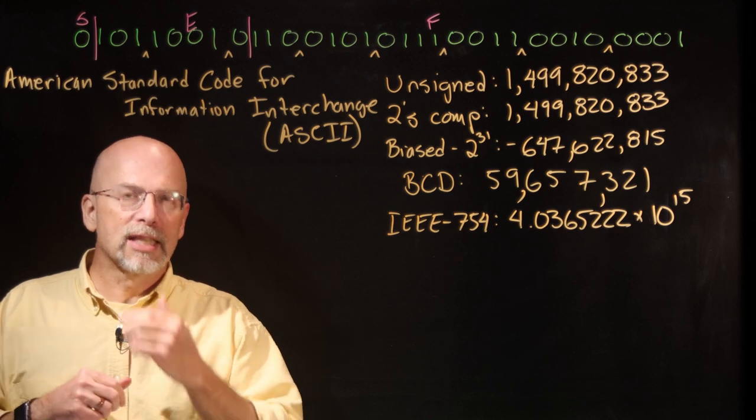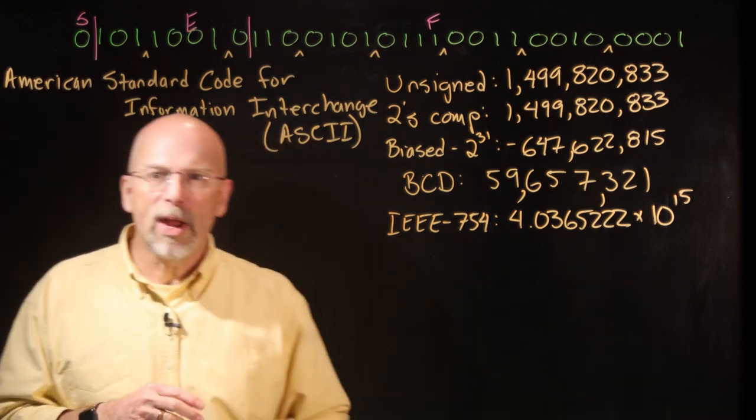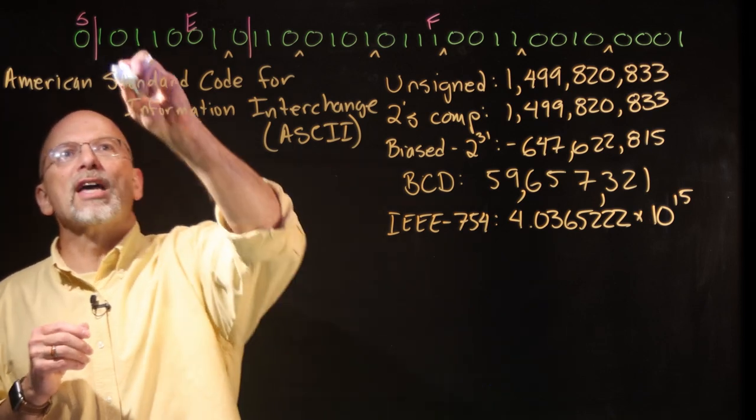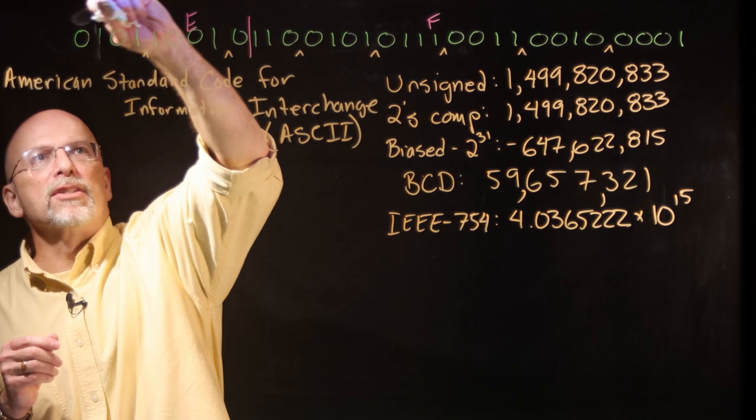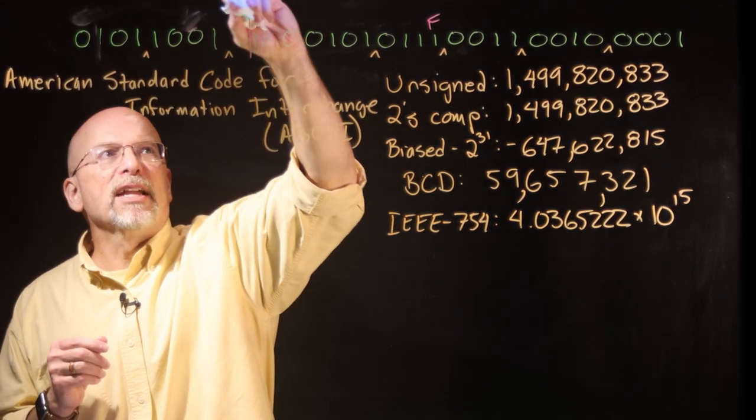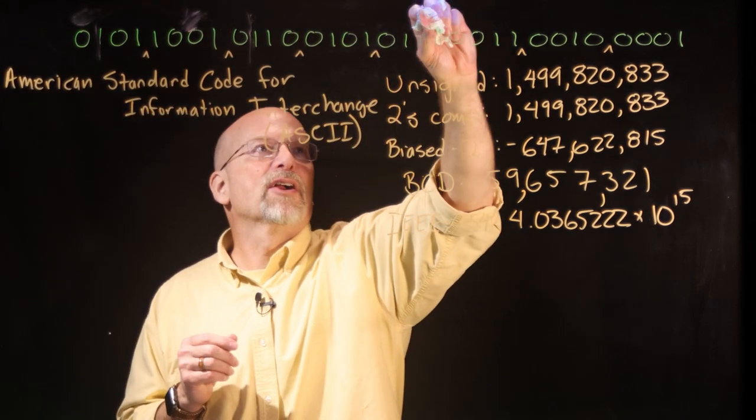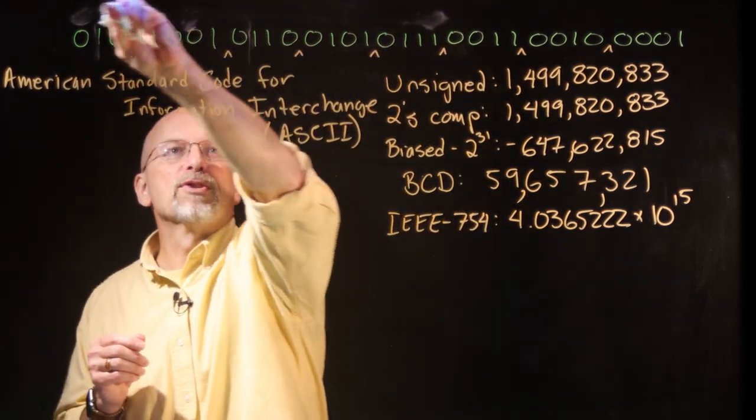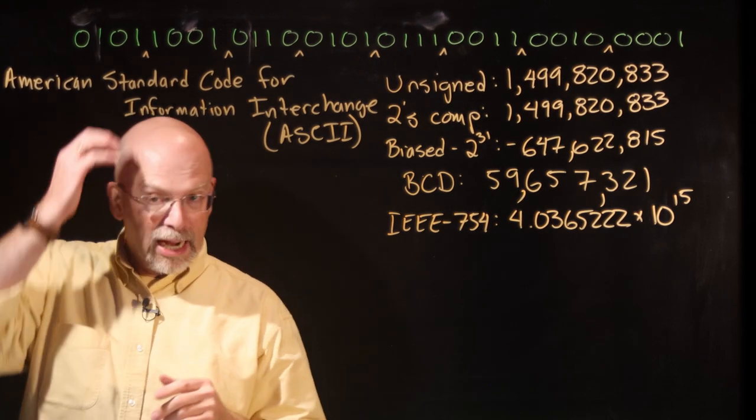So, American Standard Code for Information Interchange. And what they did was they said, what we're going to do is we're going to take these patterns of ones and zeros, and we are going to have them represent characters. And in fact, what's interesting about this is that they figured out that after they put together all of the characters that they thought they would need to represent, they really only needed to have seven bits to represent a character.